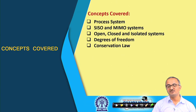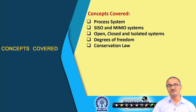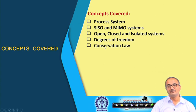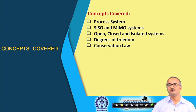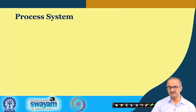We shall see in the classification: SISO and MIMO systems, open, closed, and isolated systems, then degrees of freedom and the conservation laws. These are some of the preliminaries we need to know before we go to the actual mass balances or writing the balance equations.